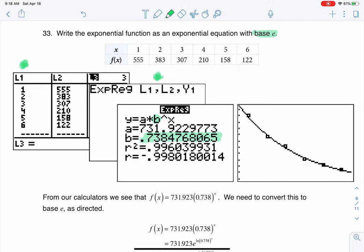In our base, we need e. We know e is around 2.718 and so on and so forth. So somehow I need to get this base over to base e.